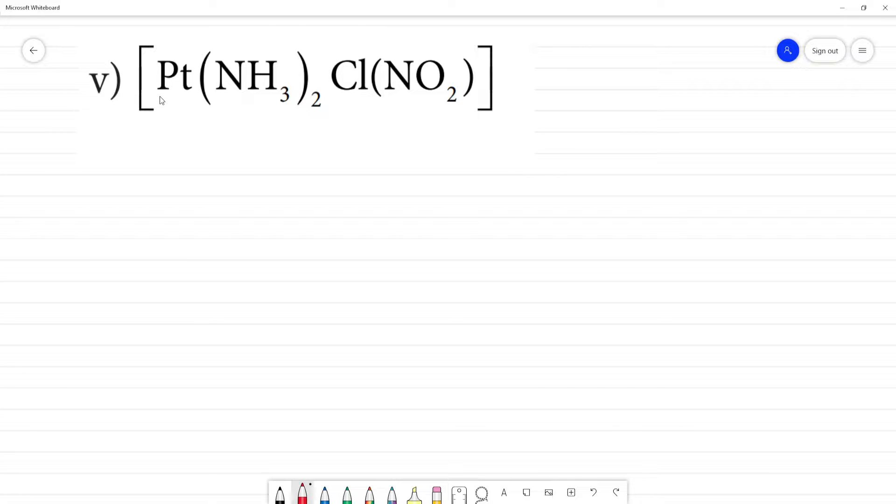Next compound, Pt. Platinum NH3ClNO2. So, what is this? The complex is neutral. Clear, there is no anionic complex, there is no cationic complex. This is neutral.